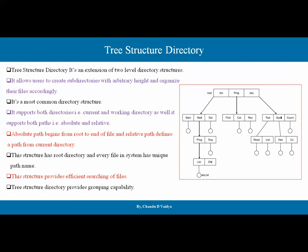Tree structure directory provides a grouping capability. There are sub-directories created — for example, within bin there is a mail sub-directory, under proc there is exp, and there is a list of objects. This is the tree-level directory structure with grouping of files and folders.